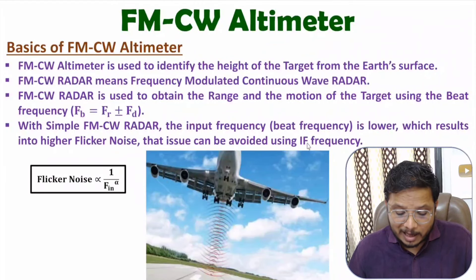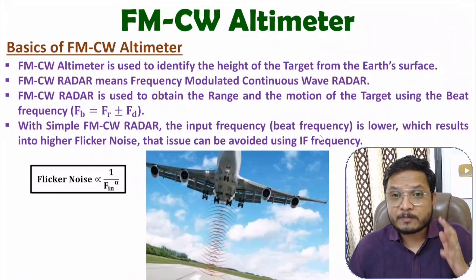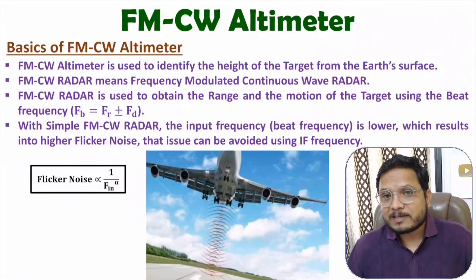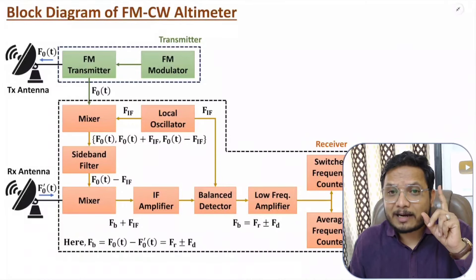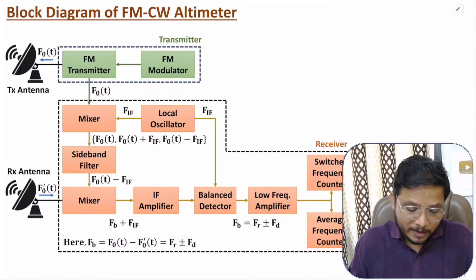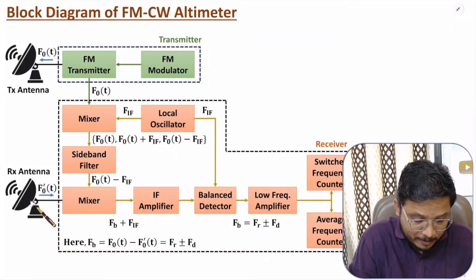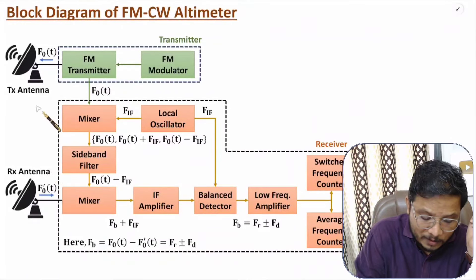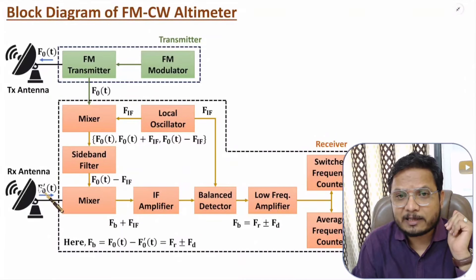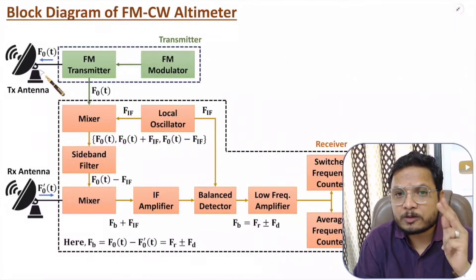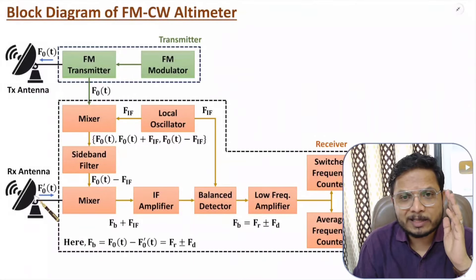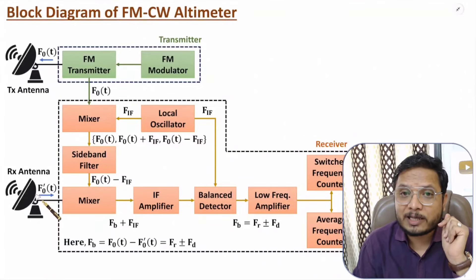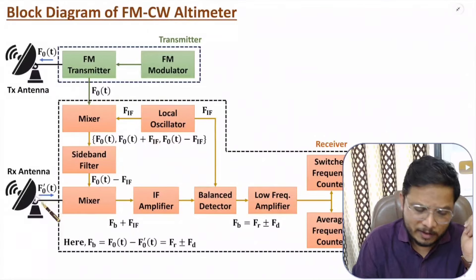Now I'll explain the block diagram of FMCW radar system with IF frequency added to the receiver system. In the basic structure of FMCW radar system, we have three major elements: antenna, transmitter, and receiver. Here we have two separate antennas — one for transmitter and one for receiver. The transmitter functions at high power and the receiver at low power. With two separate antennas, we can provide excellent isolation between transmitter and receiver. The transmitted signal is in terms of few kilovolts to megavolts, while the received echo signal is in terms of 10 to the power minus 12 to 10 to the power minus 15 volts. So it is essential to provide isolation, which we achieve with two separate antennas instead of a duplexer.